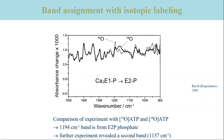This produced a labeled phosphoenzyme. In the thick-lined spectrum, the sharp band at 1194 cm⁻¹ is clearly reduced. Therefore, this band can be assigned to the unlabeled phosphate group of the phosphoenzyme E2P. In other experiments, we have identified a second phosphate band, this time at 1137 cm⁻¹.